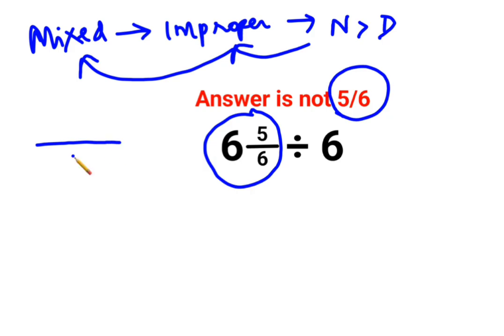the denominator continues to remain the same. And we have the numerator that changes to what? This integer part gets multiplied to the denominator. So we have 6 multiplied by 6 plus the numerator which is 5.